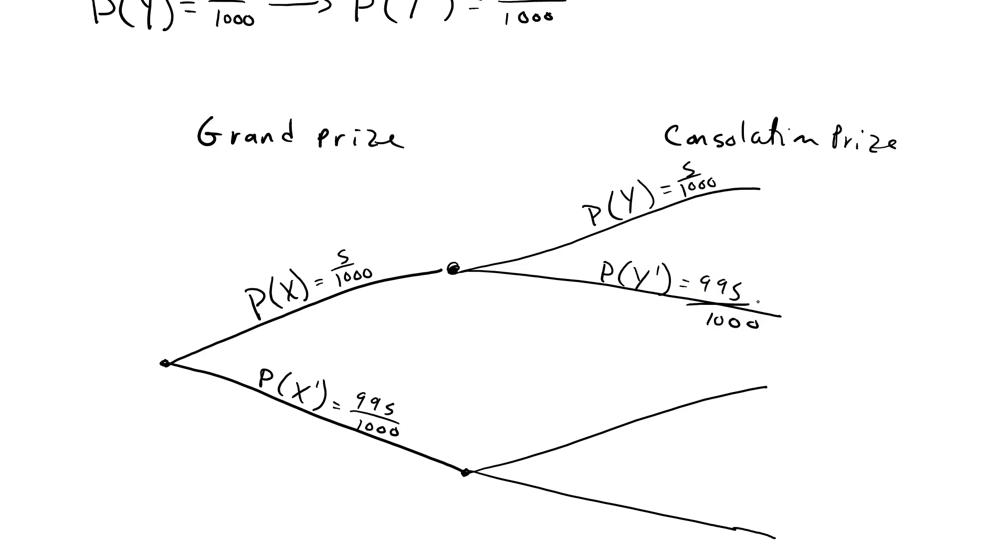So, we're just looking at the different options here. You can win the grand prize and win the consolation prize, or you can win the grand prize and lose the consolation prize. You can lose the grand prize and win the consolation prize, or you can lose the grand prize and also lose the consolation prize.